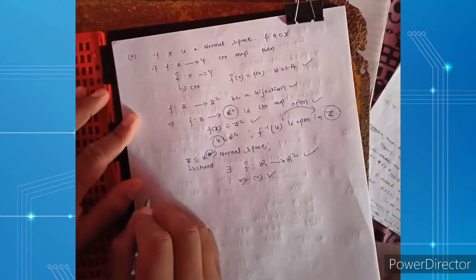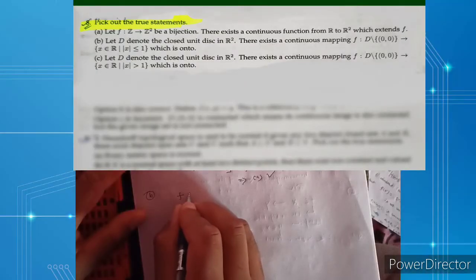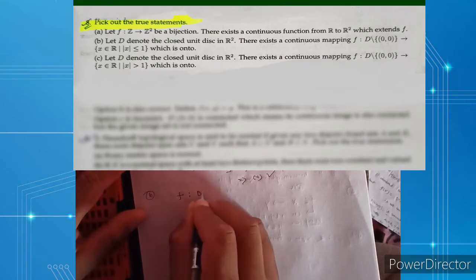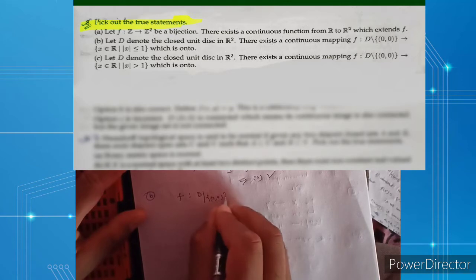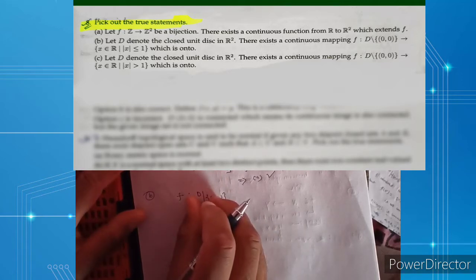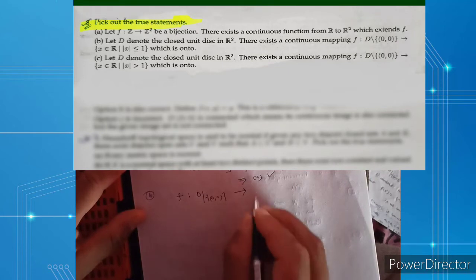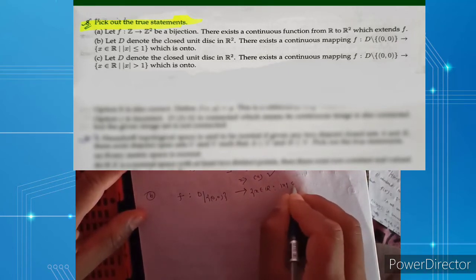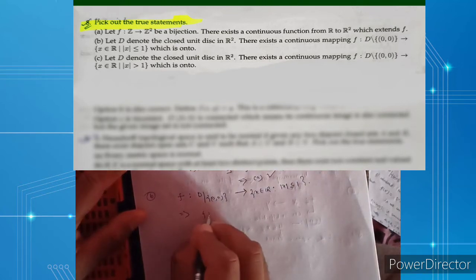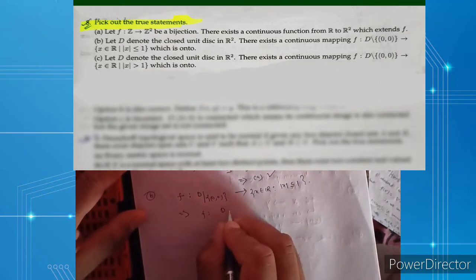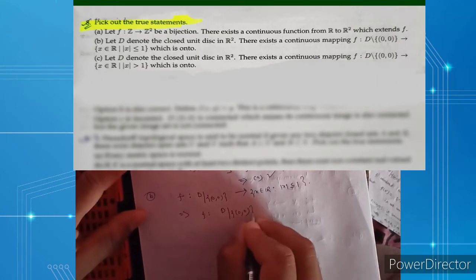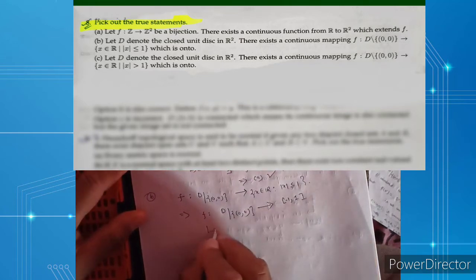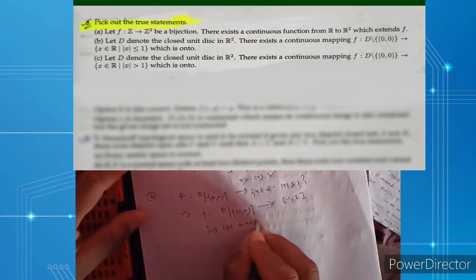Now the second statement: f is given as a continuous map from D (the closed unit disc in R²) to R, where D = {x ∈ R² : |x| ≤ 1}. This implies f maps D to the closed interval [-1, 1], and f is given to be continuous and onto.